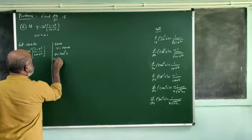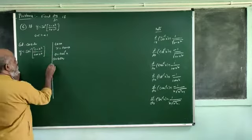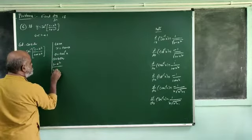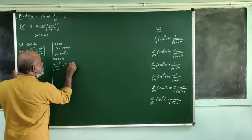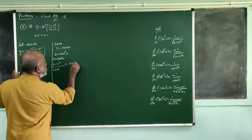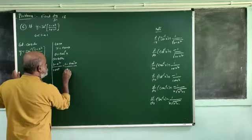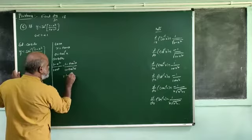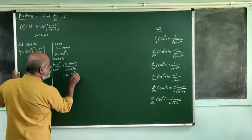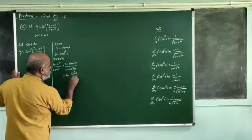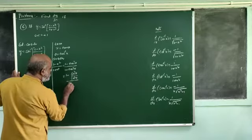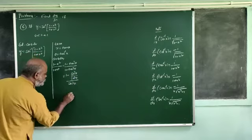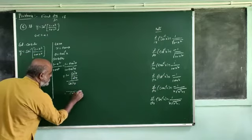Consider the next problem: the expression is (1 minus x squared) divided by (1 plus x squared). We have 1 minus x squared equal to 1 plus x squared, and simplifying, 1 plus y is equal to 1 plus x squared.